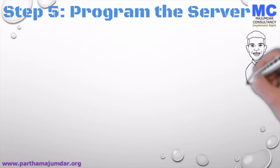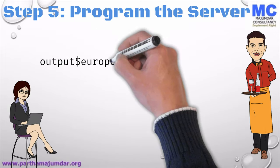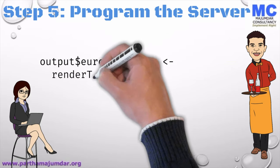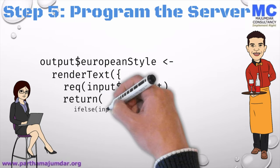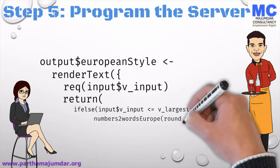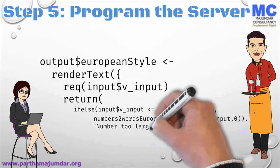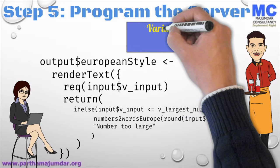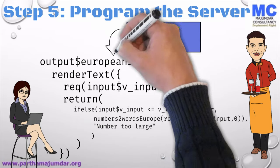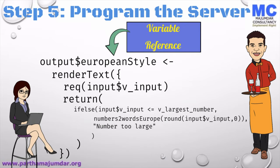Now that we have programmed the UI, next let's program the server. In the server, we program output and for the output we need to give the variable name. Remember the variable name we used during the rendering of the output — European style. So we need to say output$EuropeanStyle. Also remember we had said textOutput, so we should use the function renderText. We use the req function to say that we definitely require the variable before we can produce the output. Then we return the output as per the if statement that we have programmed, using the function numberToWord to generate the output of numbers in words.